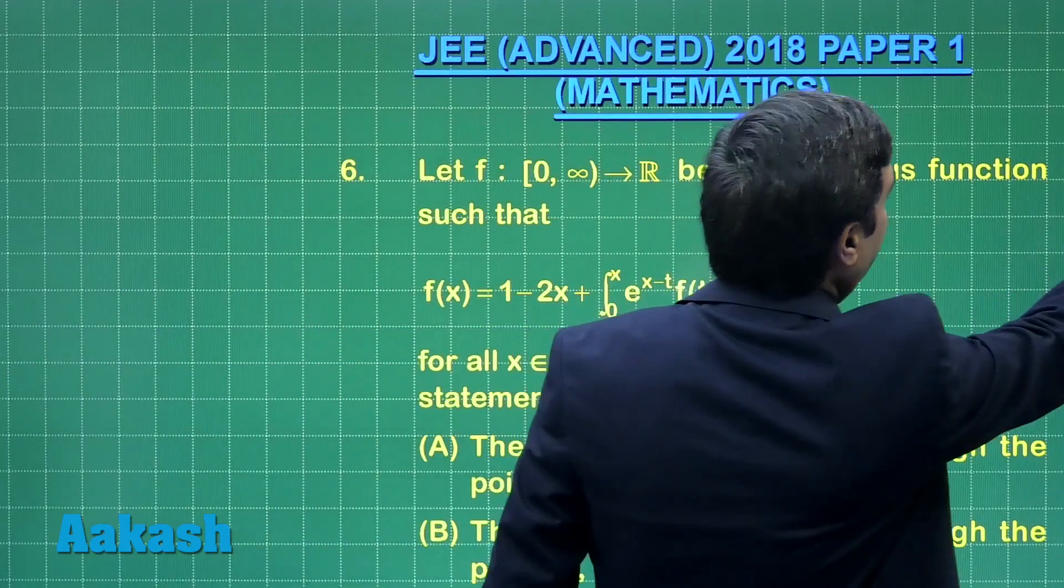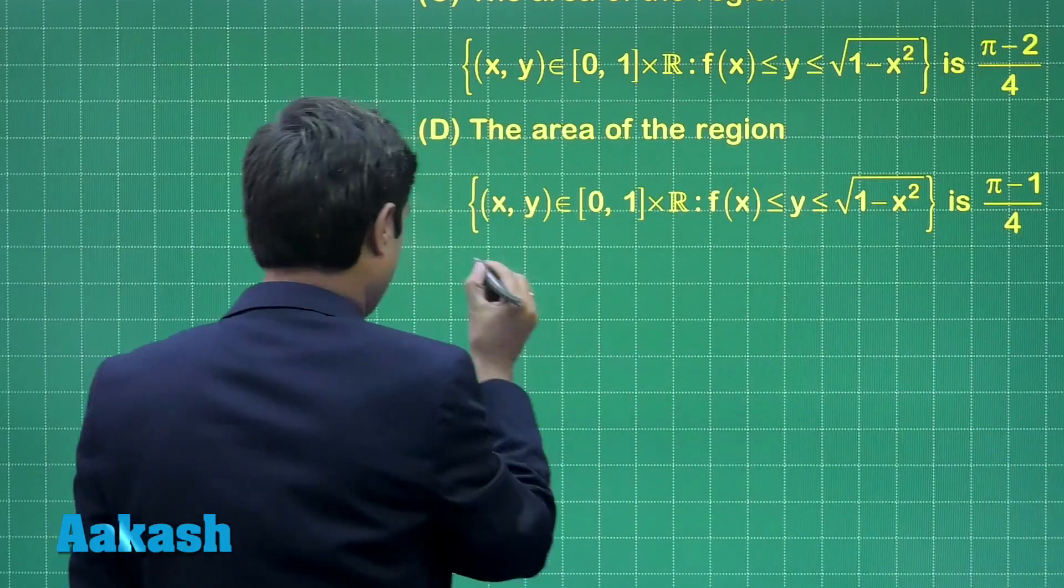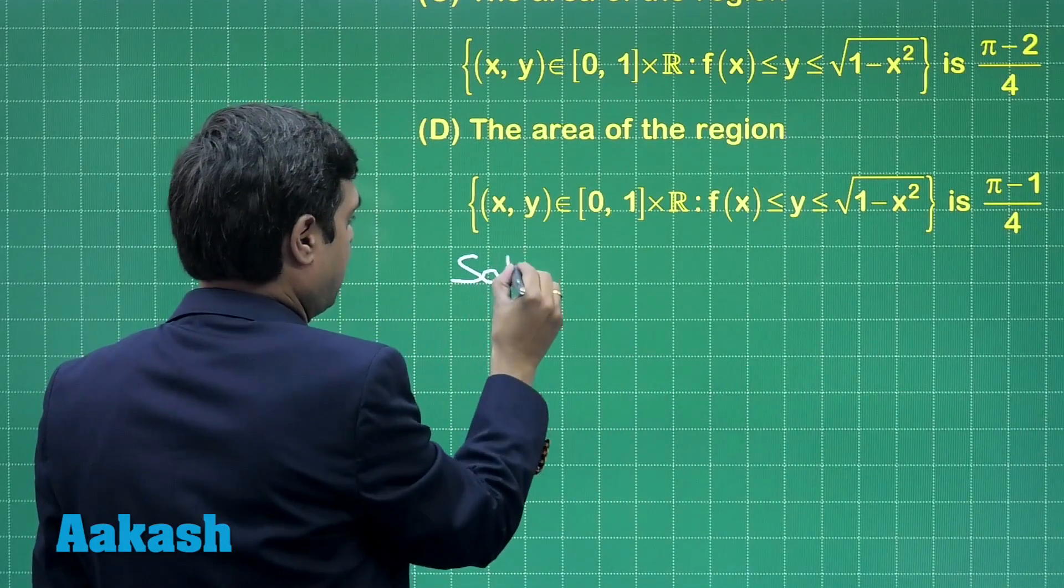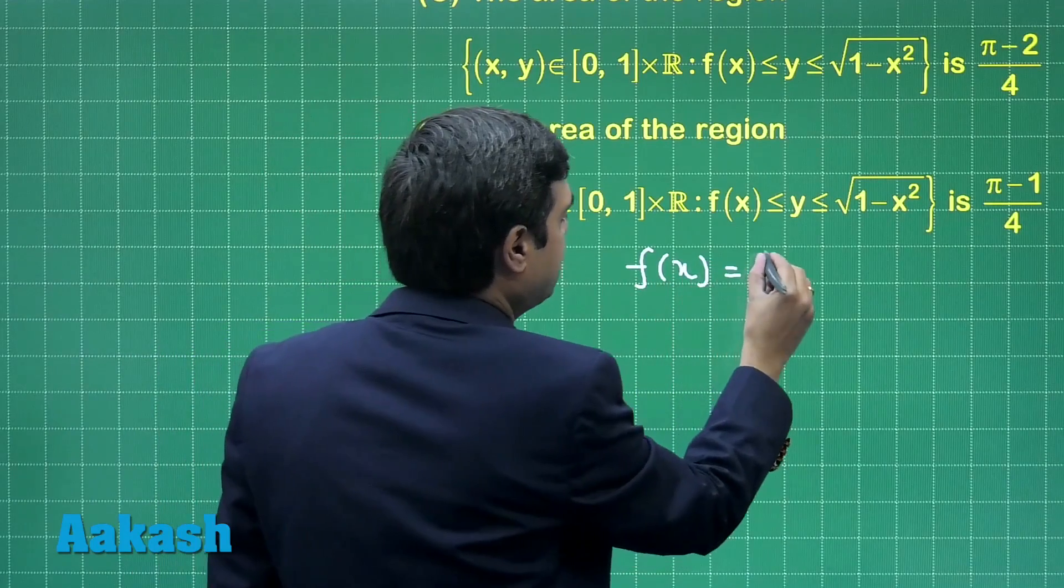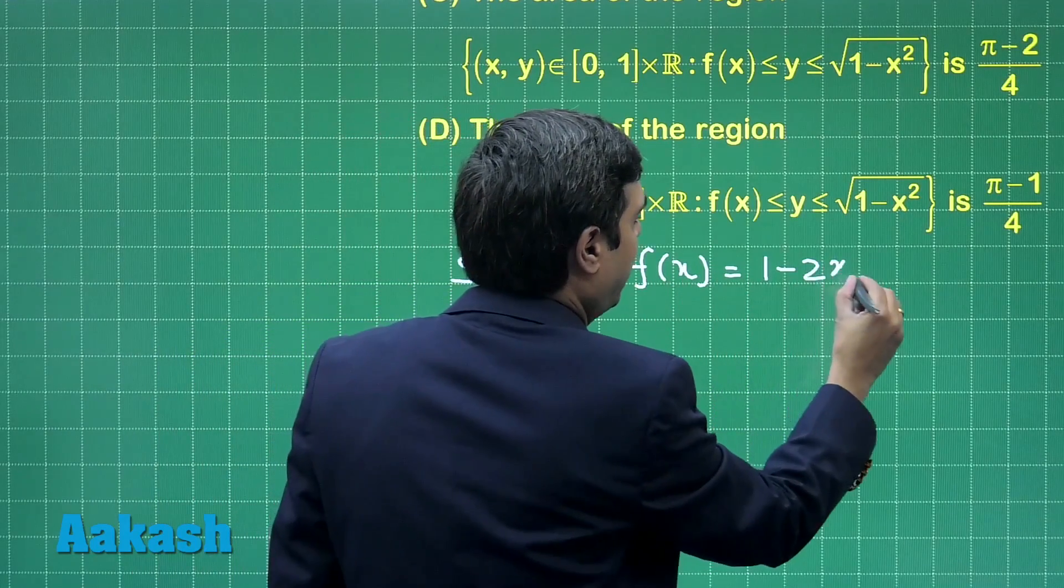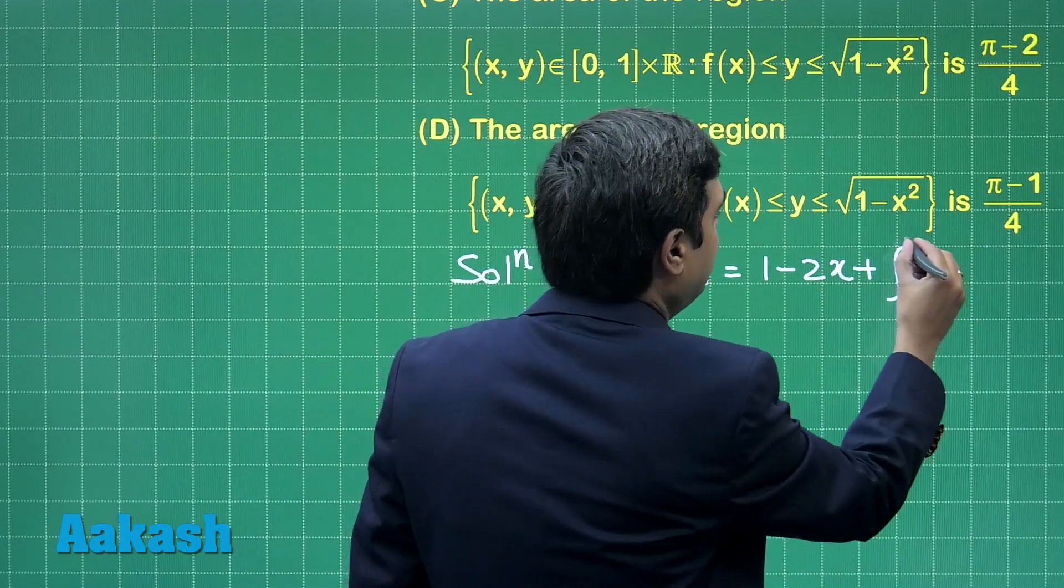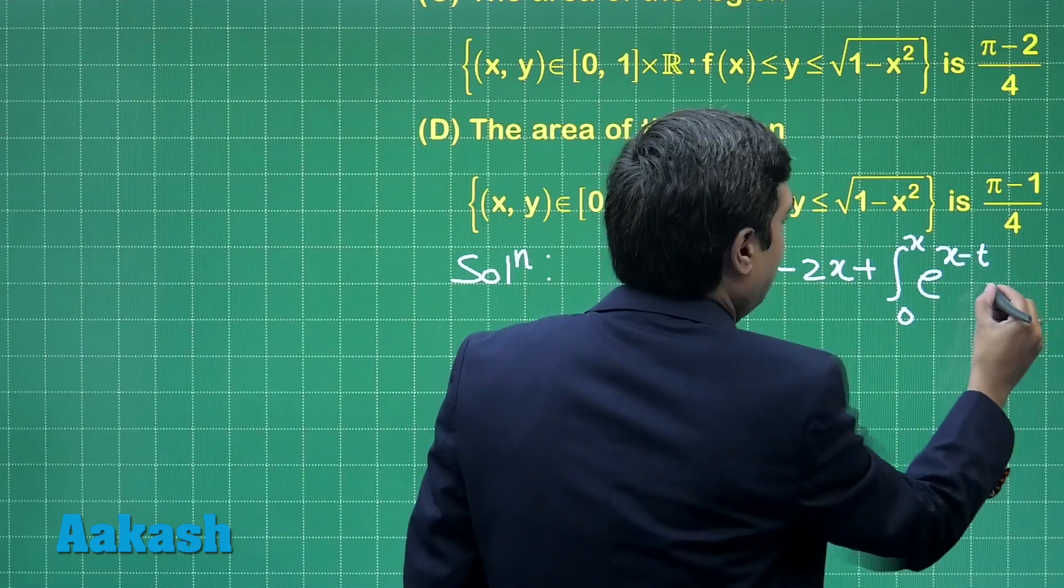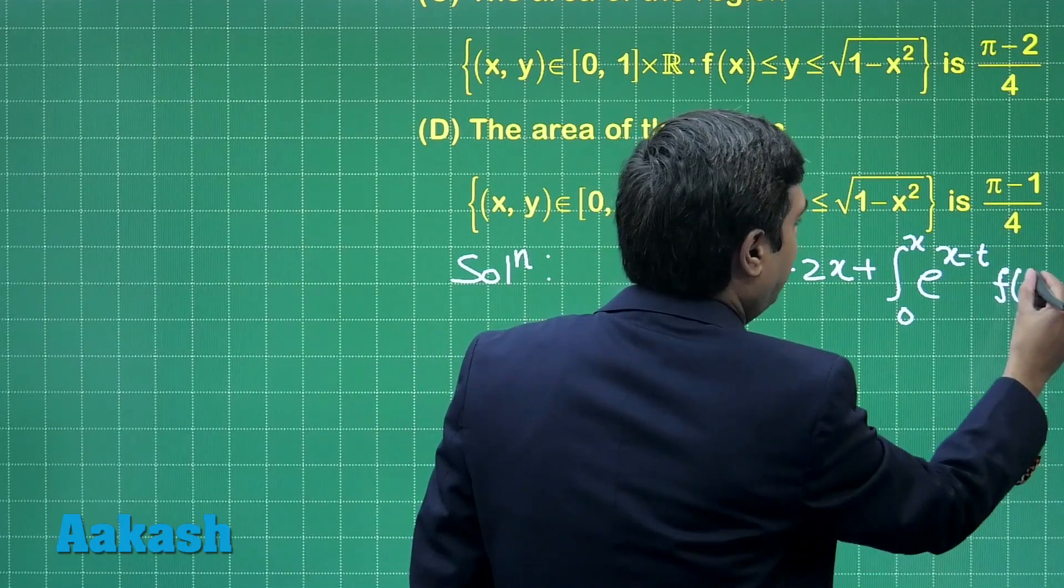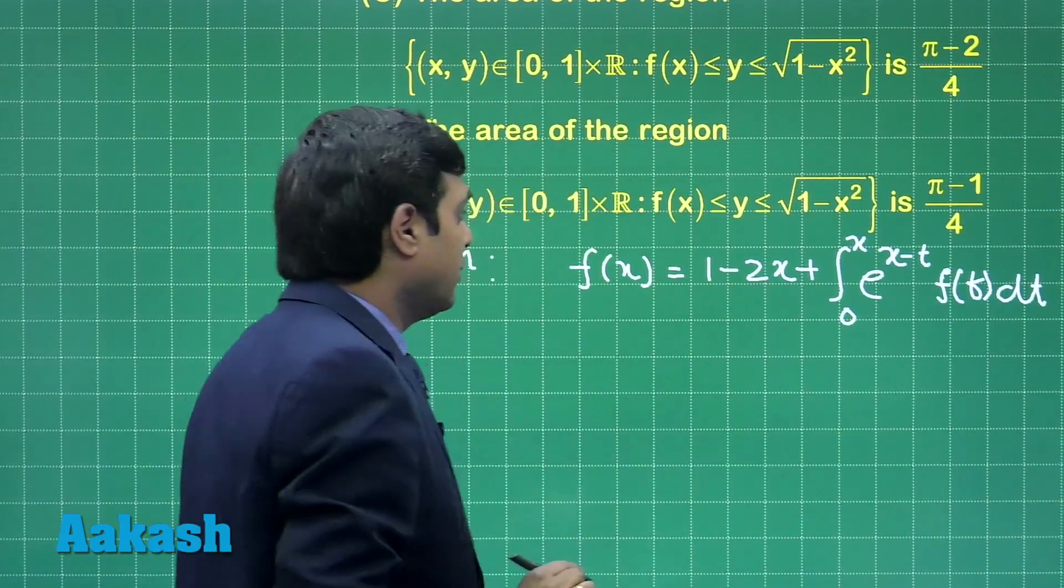Start with this equation which is given as f(x) equals 1 minus 2x plus integral 0 to x e to the power (x minus t) f(t) dt. Now, differentiating this equation...